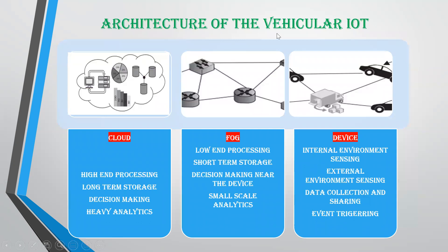The architecture of vehicular IoT is divided into three layers: cloud, fog, and device. Cloud is chosen because we are handling a huge amount of data in real time for communication from vehicles to users. Cloud offers high-end processing and long-term storage, so there is no need to worry about storage. When real-time data is immediately updated on the cloud, decision-making is easy, and users can generate analytics on road conditions and traffic.